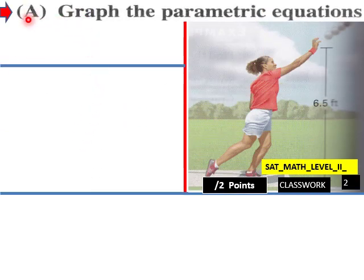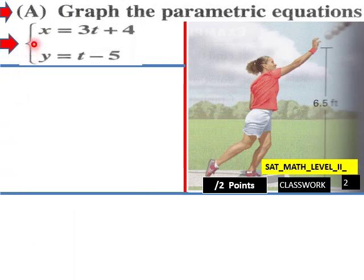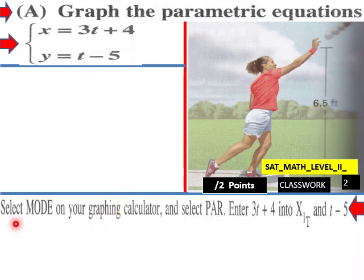Example A: graph the parametric equations X equals 3t plus 4 and Y equals t minus 5. Select mode on your graphing calculator and select par.